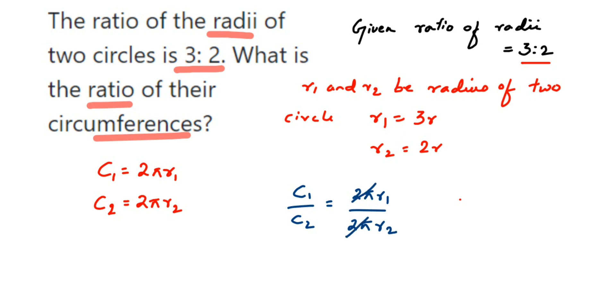So what we're gonna get here - this is equal to r1 upon r2. But what is r1 and r2? We have seen r1 is 3r, so 3r upon, what is r2? It is 2r, substitute that.